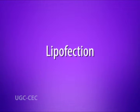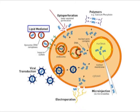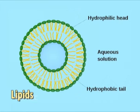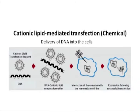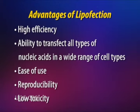Next is lipofection. The delivery of DNA into cells using liposomes is called lipofection. Liposomes are small vesicles prepared from suitable lipids. Lipids consist of a hydrophobic tail and a hydrophilic head group, which can be polarized or charged. The lipofection principle is to associate nucleic acids with a cationic lipid formulation. The resulting molecular complexes, known as lipoplexes, are then taken up by cells. The main advantages of lipofection are its high efficiency, its ability to transfect all types of nucleic acids in a wide range of cell types, ease of use, reproducibility, and low toxicity.